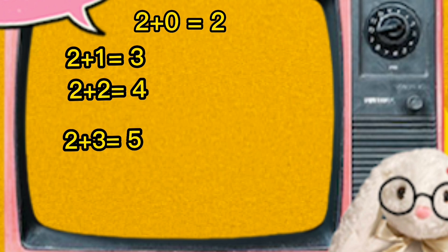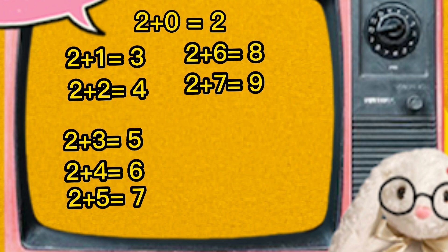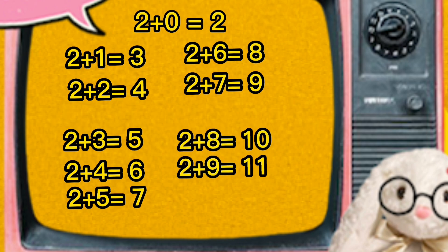2 plus 3 equals 5, 2 plus 4 equals 6, 2 plus 5 equals 7, 2 plus 6 equals 8, 2 plus 7 equals 9, 2 plus 8 equals 10, 2 plus 9 equals 11, 2 plus 10 equals 12.